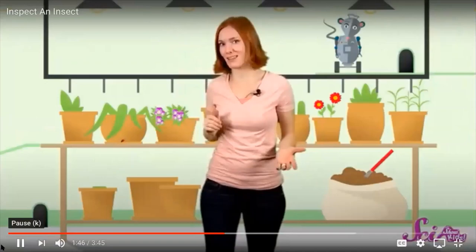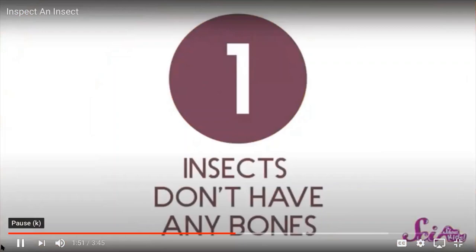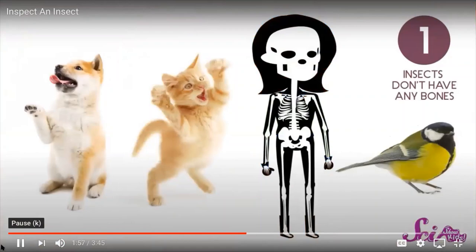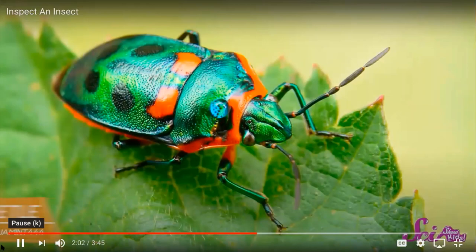How can you tell an insect when you see one? Well, all insects have three big things in common, and they're pretty easy to spot. First, insects don't have any bones. Lots of animals, like your dog, your cat, a bird, or you, have a skeleton made of bones. This lets us stand up straight and move around, but insects have their skeletons on the outside. Instead of bones, they have a hard shell around their body called an exoskeleton. Another thing insects have in common is that their bodies all have three main parts.